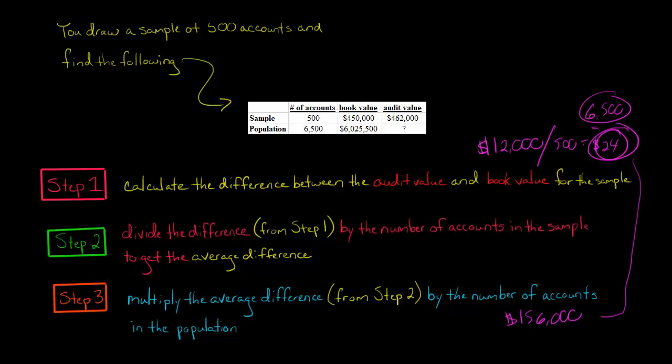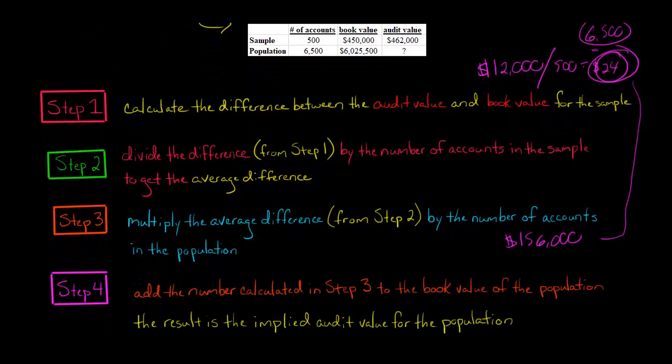But we're not done, because now, and this is our final step, we're going to take the number we just calculated, the $156,000, and add it to the book value of the population.